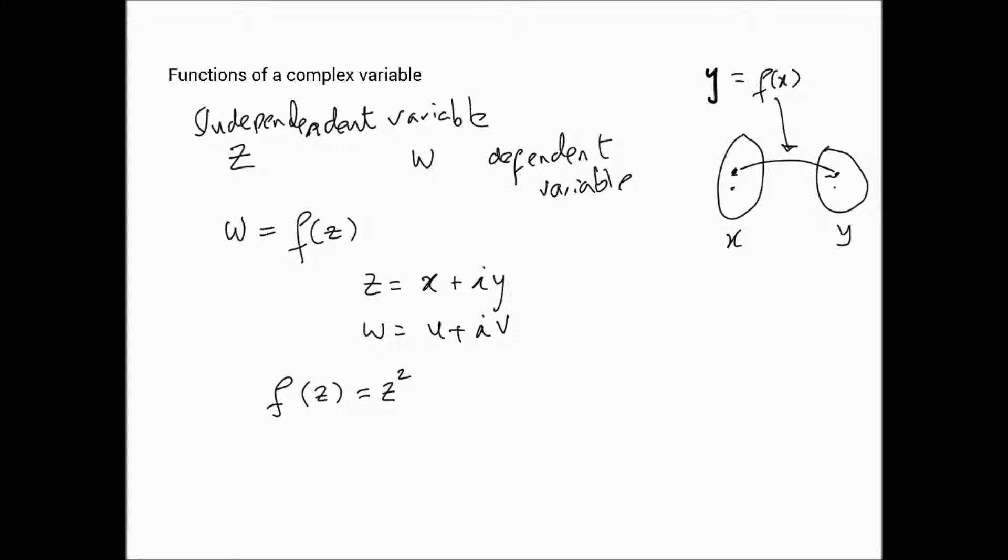Because before, you have the independent variable x and the dependent variable y. And if y is equal to x squared, that's it. The numbers are being squared. Here, of course, it's the same thing. Numbers are being squared, but these are complex numbers now. So drawing the argand diagrams involved is much significantly more complicated.